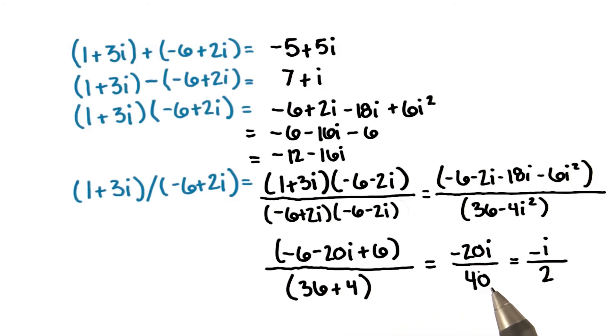or negative 20i over 40, and finally negative i over 2.